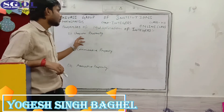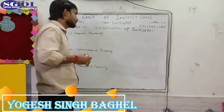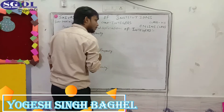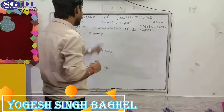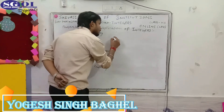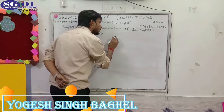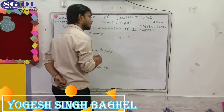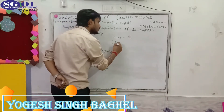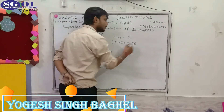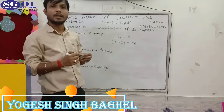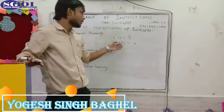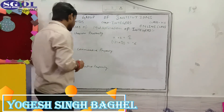I will tell you about the closure property of multiplication of integers. According to the multiplicative closure property of integers, the product of any two integers will also be an integer. So, the product of integers, a × b, is equal to an integer.